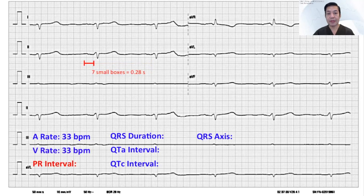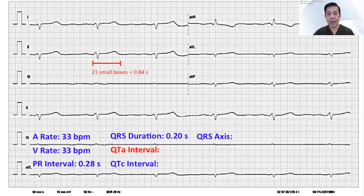The PR interval in this ECG, measured from the beginning of the P-wave to the beginning of the QRS, is 7 small boxes, and multiplying by 0.04 gives 0.28 seconds. The QRS duration, measured from the beginning of the Q-wave to the end of the QRS, is 5 small boxes, so multiplying again by 0.04 gives 0.22. The assessed QT, measured from the beginning of the QRS to the end of the T-wave, is 21 small boxes — multiplying by 0.04 gives 0.84 seconds. Getting the QTc using Bazett's formula, we divide the assessed QT by the square root of the R-to-R interval in seconds. In this case it is 1.8 seconds, so dividing 0.84 by the square root of that gives 0.63 seconds.